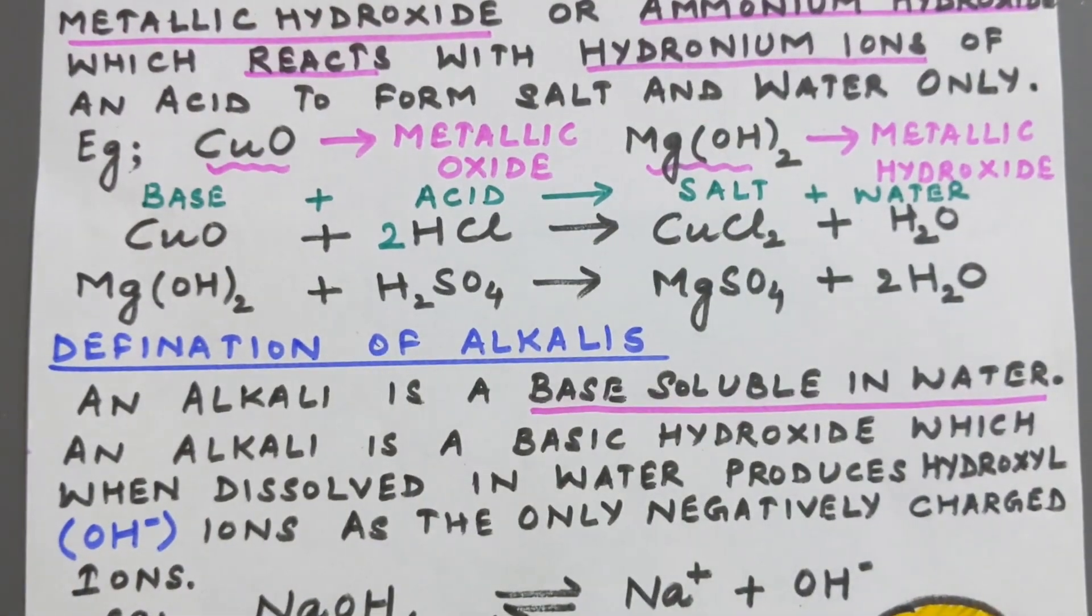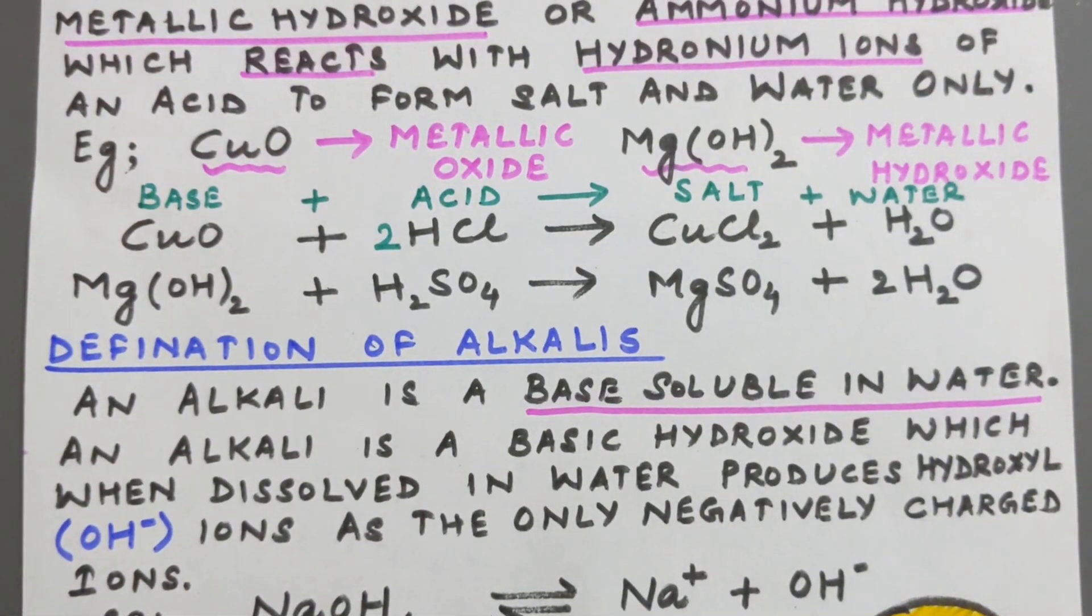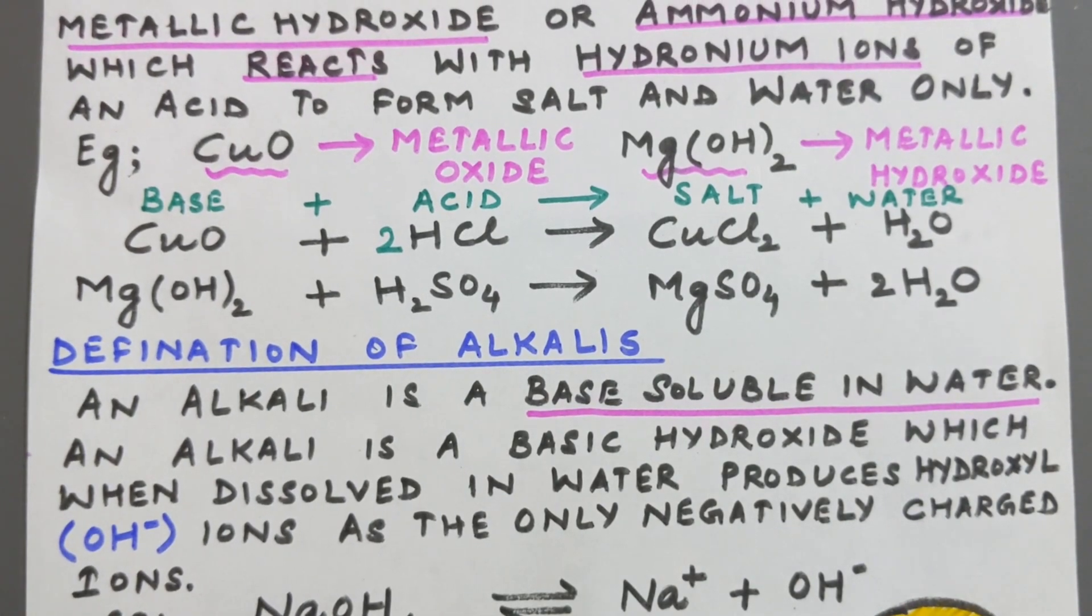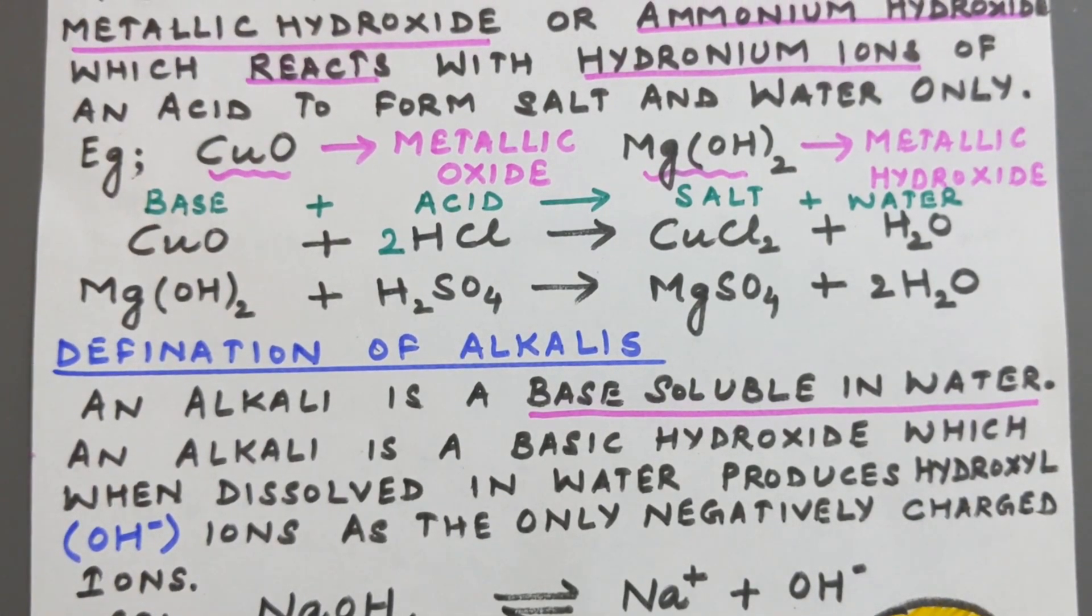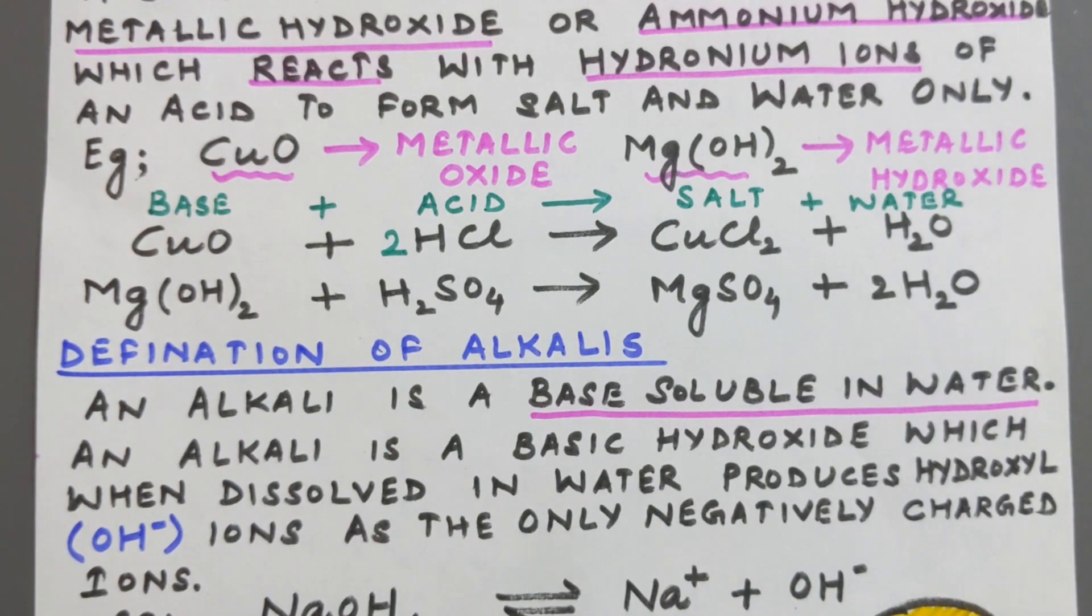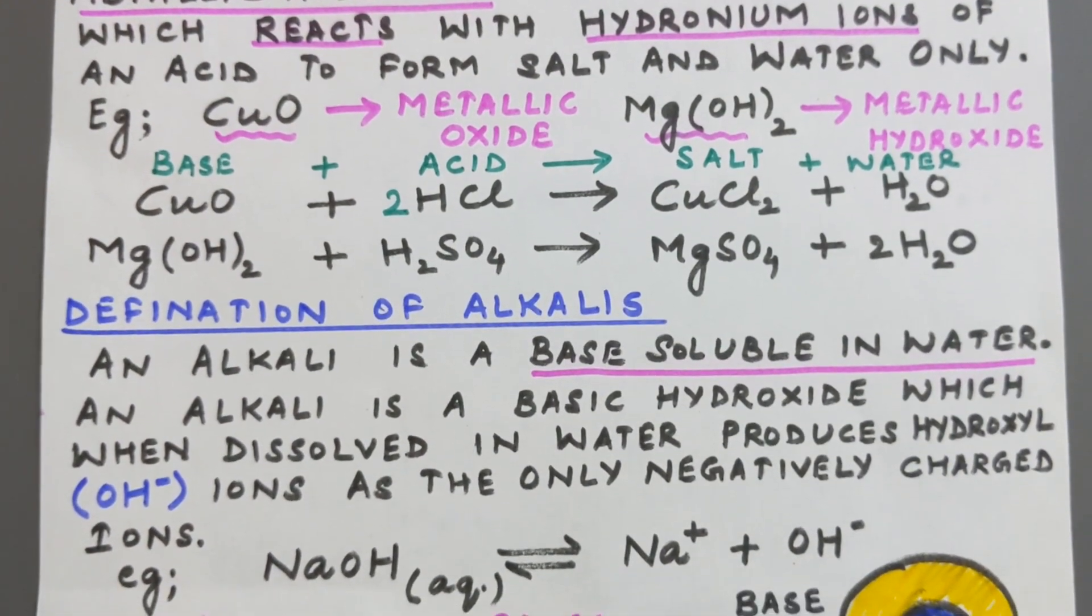Similarly, metallic hydroxide, magnesium hydroxide is combining with acid sulfuric acid H2SO4 to form MgSO4 plus water. So that means base is reacting with an acid to form salt and water only.